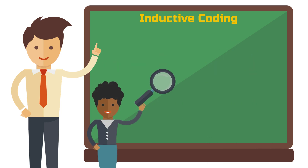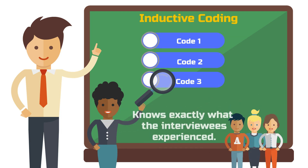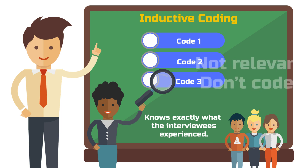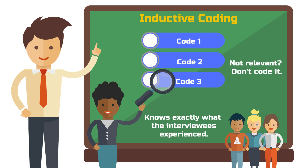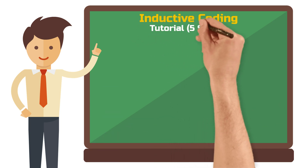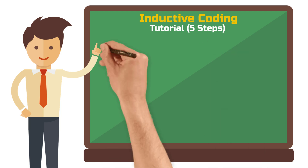This means that you want to end up with a list of codes that are representative of your entire data set in relation to your research objective. If someone looks at that list, they know exactly what the interviewees experienced when collaborating in VR. This also means that if something people said is not relevant to team collaboration in VR, you don't need to code it. To make it a little easier, you can follow these five steps to build your first inductive codes.